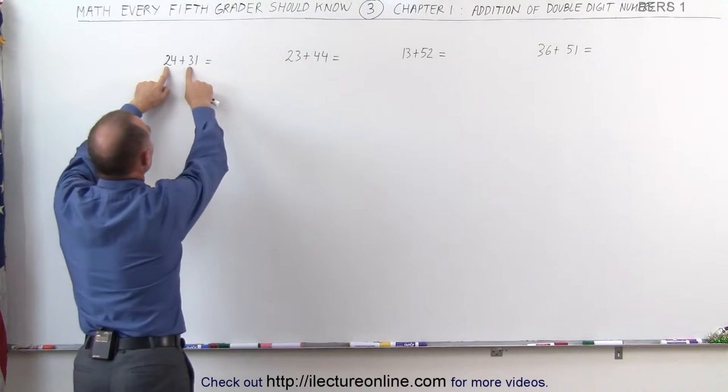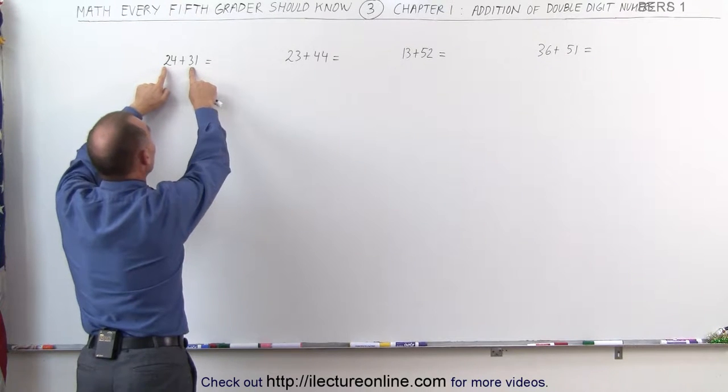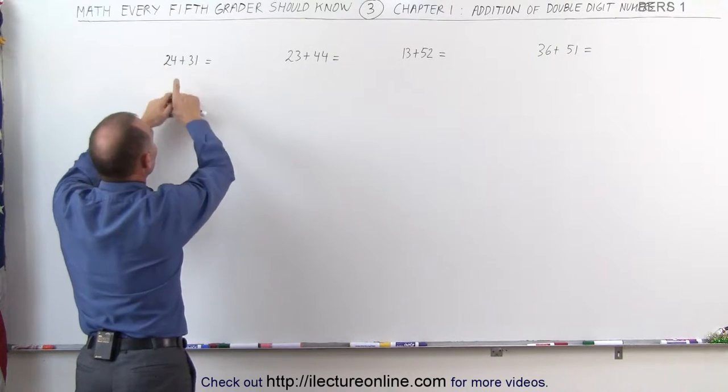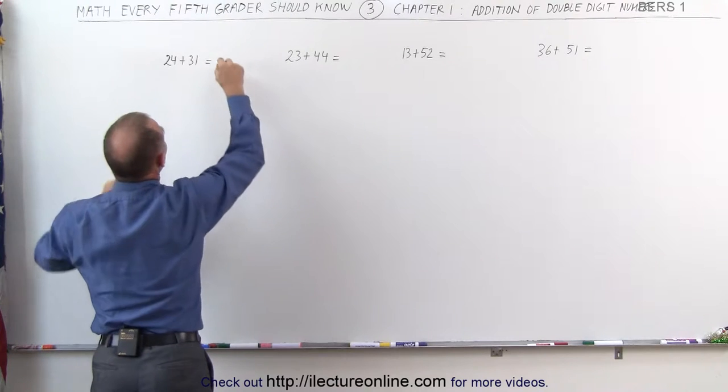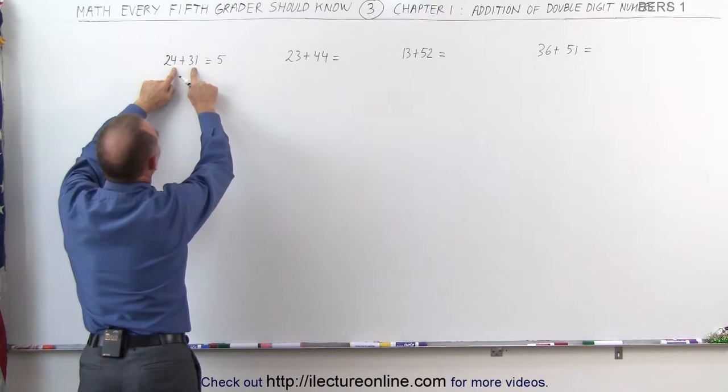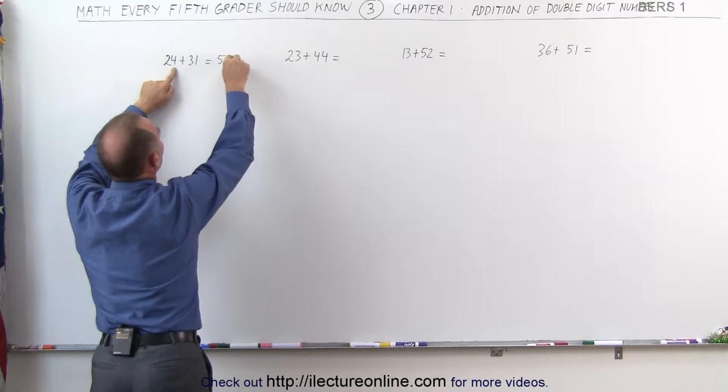We simply add the first two numbers together, 20 plus 30. What you do is you can say 2 plus 3 is 5, and my first number here becomes a 5. The second number, 4 plus 1, that's 5. The second number becomes 5.